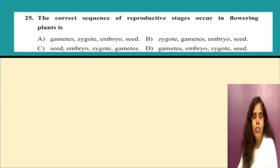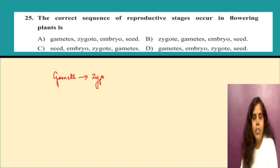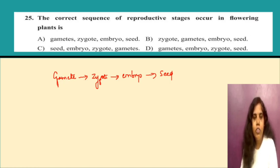Question 25: the correct sequence of reproductive stages occurring in flowering plants. The male and female gametes fuse to form a zygote. The zygote will develop into an embryo, and then the embryo will develop into a seed. This is the sequence of development, so option A will be the right one.